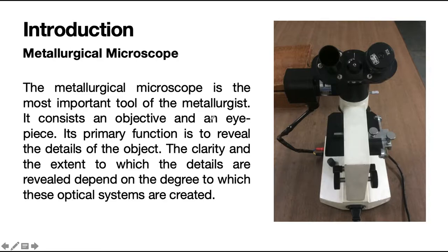The metallurgical microscope is one of the important tools used by the metallurgist. It mainly consists of an objective and eyepiece. Although it has also other components like illuminators and light filters, the objective and eyepiece are the two important components of a metallurgical microscope.